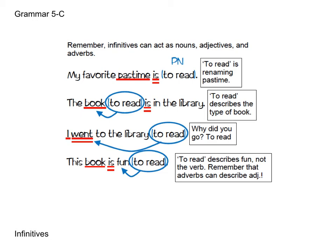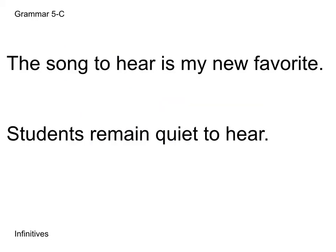Let's go over a couple more example sentences. 'The song to hear is my new favorite.' First, identify the infinitive — a non-conjugated verb beginning with 'to.' So 'to hear' is our infinitive. The verb is 'is,' and the subject is 'song.' 'Favorite' is a noun renaming song in the predicate, making it a predicate nominative. 'To hear' modifies the type of song — we circle it and draw an arrow — so it's acting like an adjective.